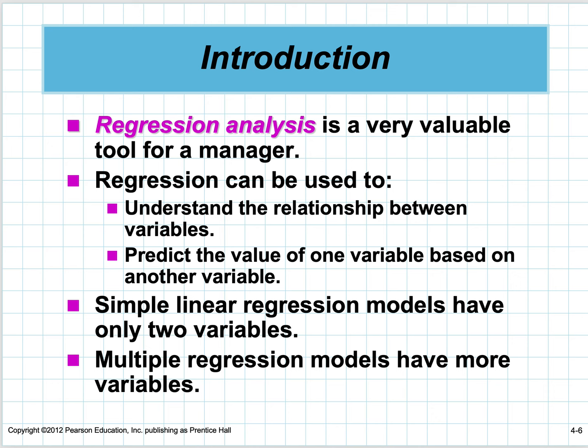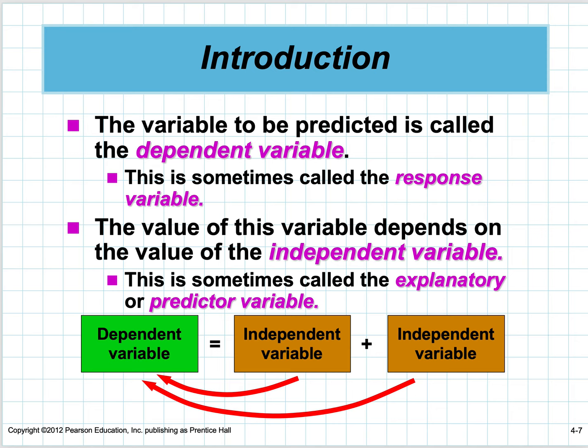The terms we use are dependent variable, sometimes called response variable, and independent variable, which are sometimes called explanatory or predictor variables. We will take an independent variable and use it to predict a variable called the dependent variable—dependent on its independent.